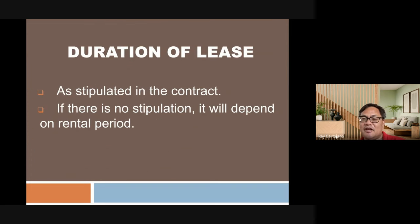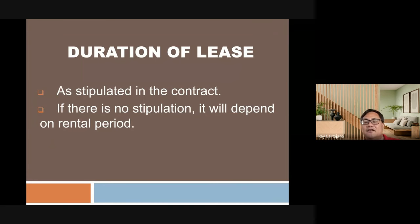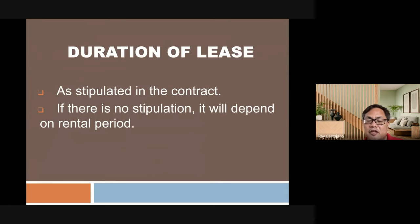Duration of the lease: as stipulated in the contract. If there is no stipulation, it depends on the rental period — for example, if rent is paid monthly, the lease period is month-to-month. If rent is paid every 15 days, then the duration is likewise 15 days per period.